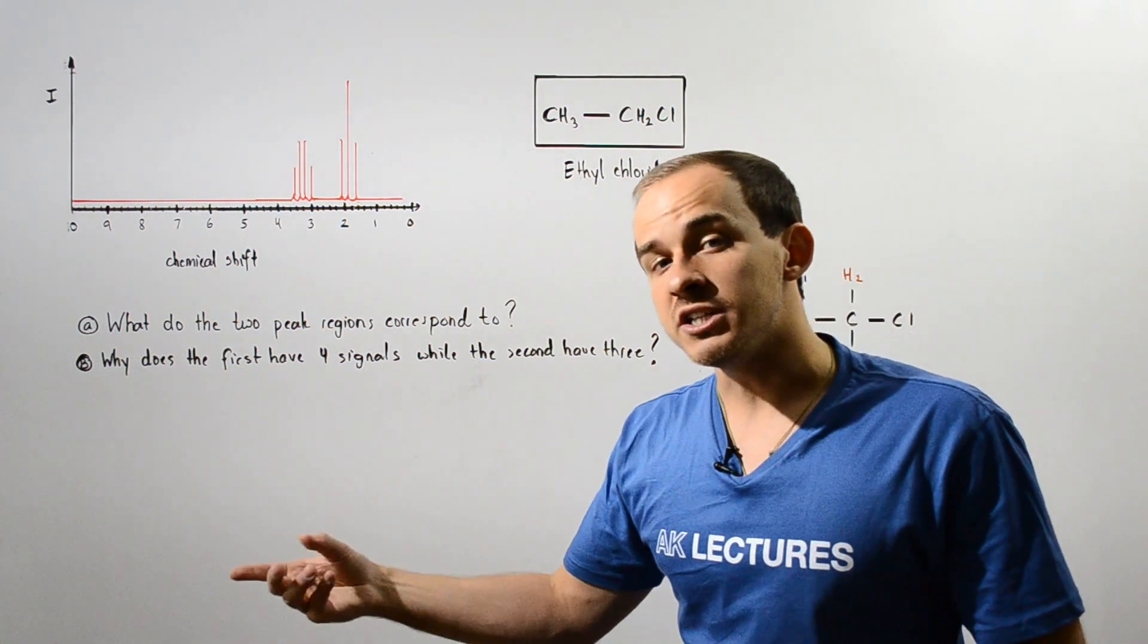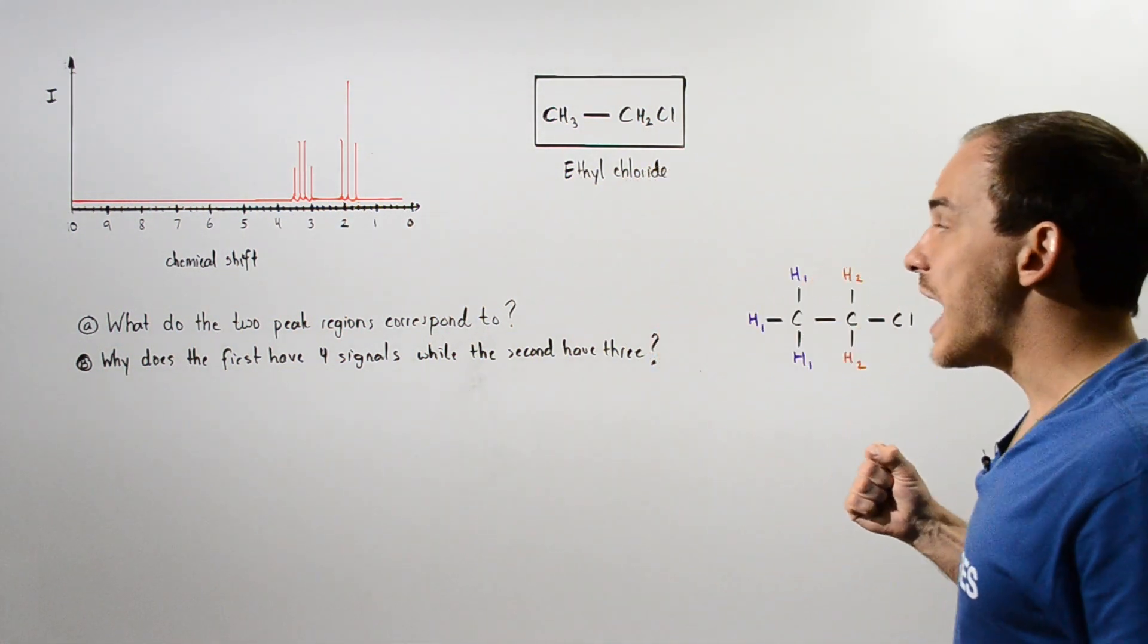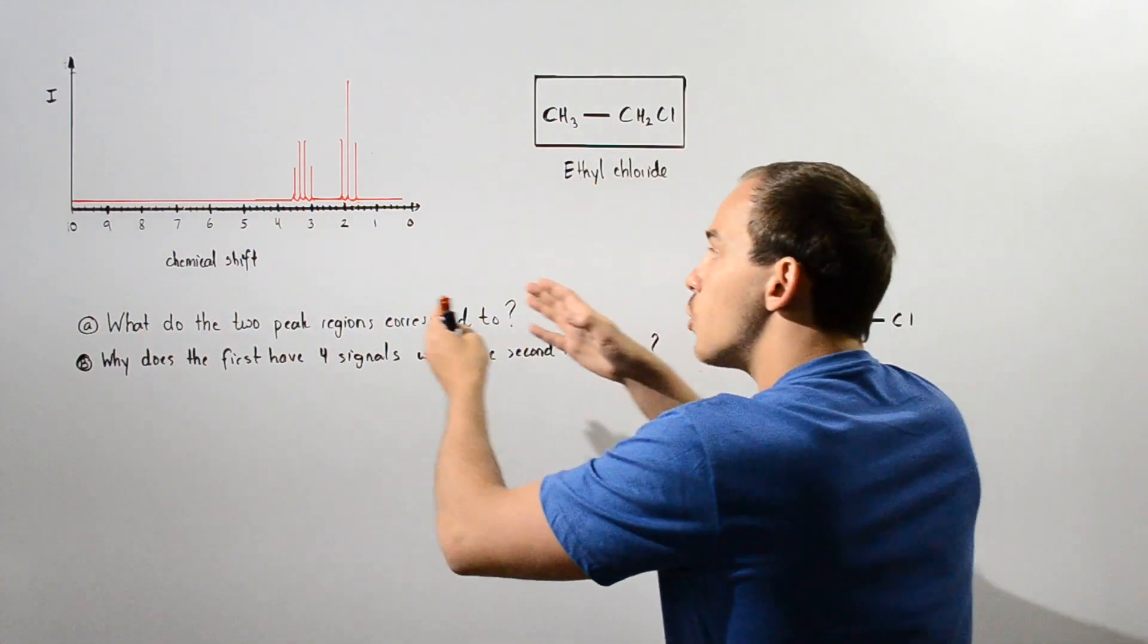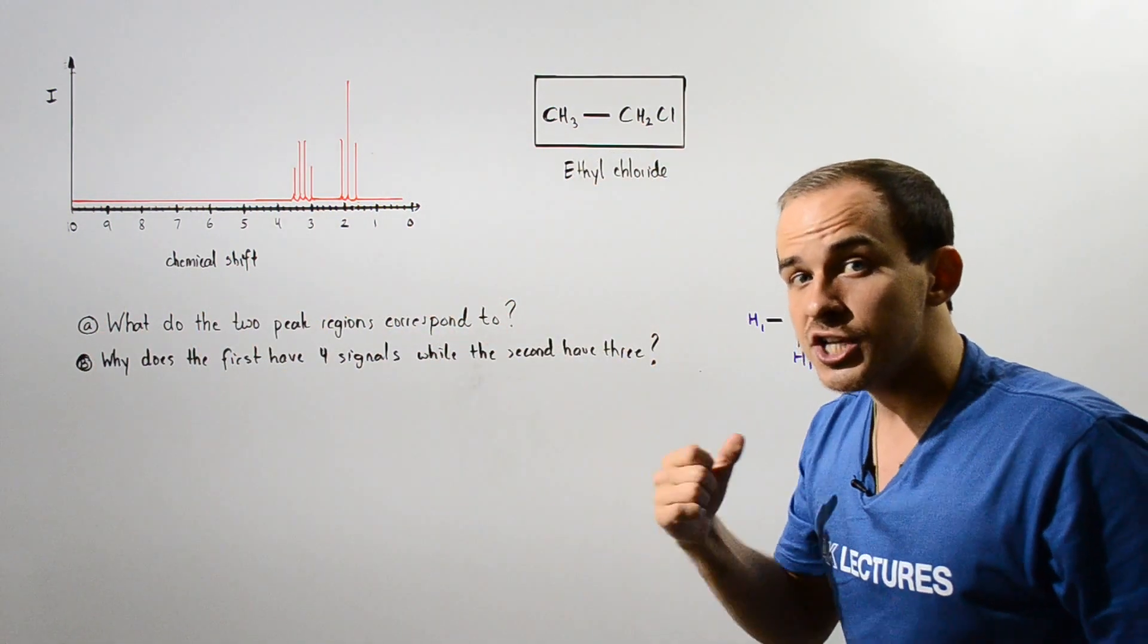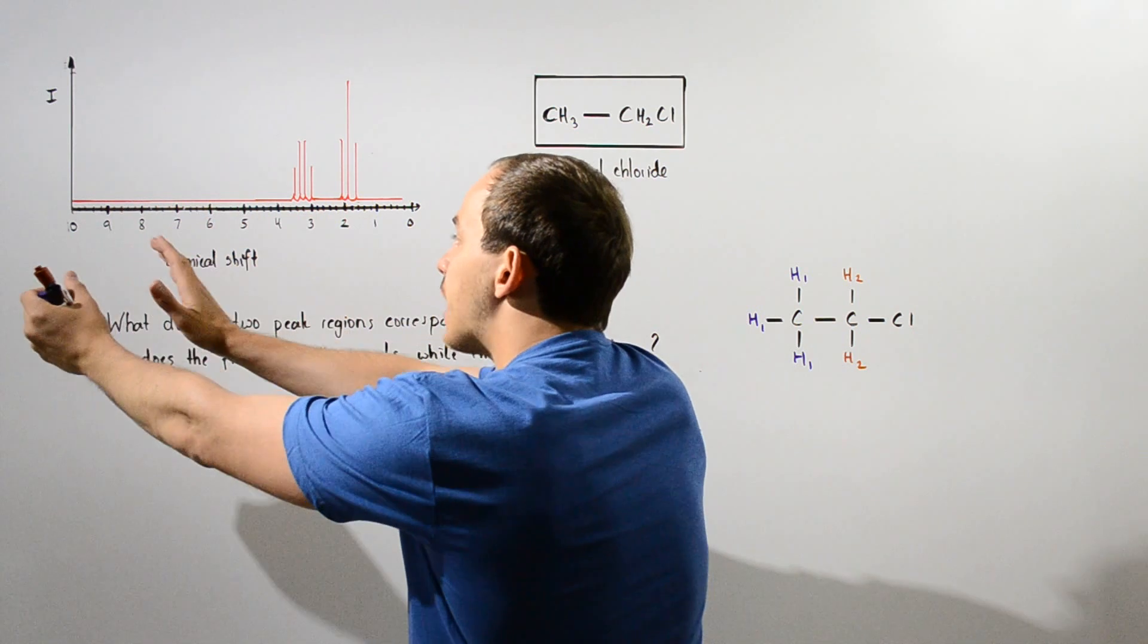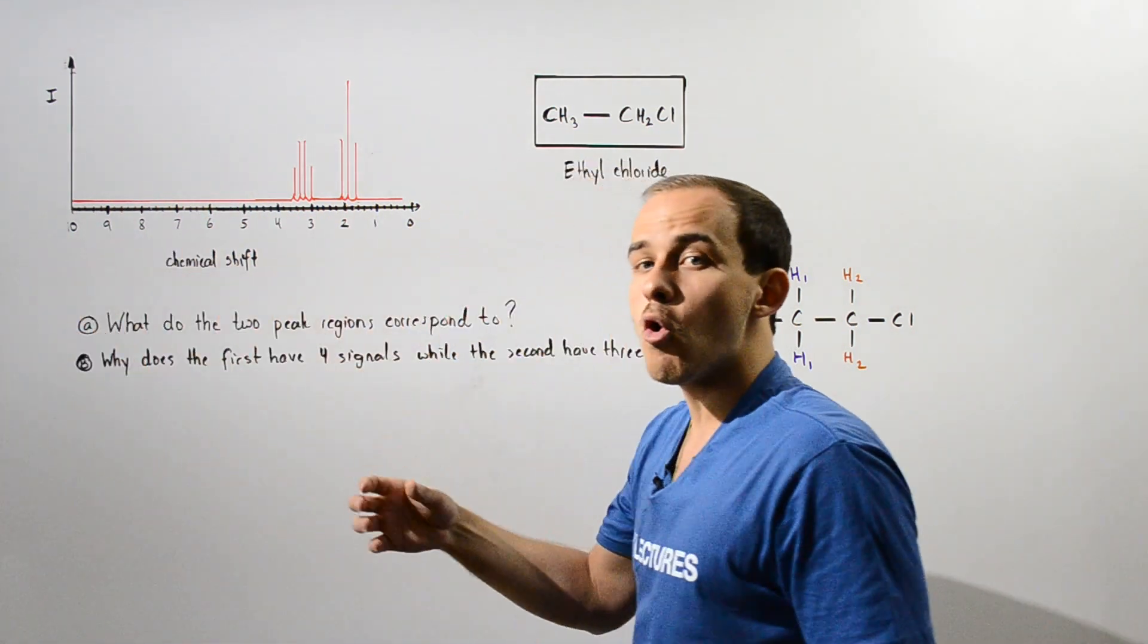Now more shielding means our H atoms will be found more upfield, so more to the right. Less shielding means they will be found more to the left or more downfield.